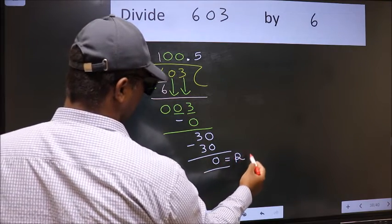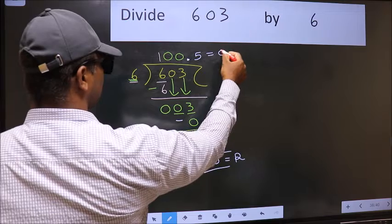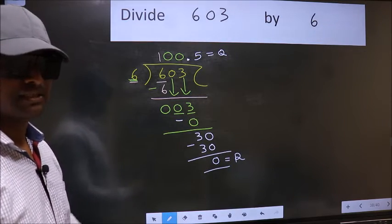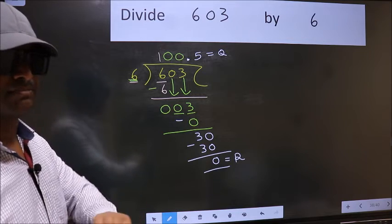This is our remainder, and this is our quotient. Did you understand where the mistake happens? You should not do that mistake.